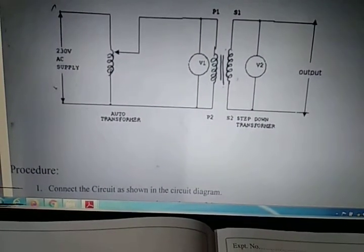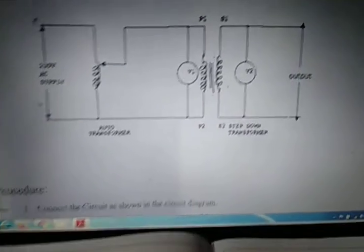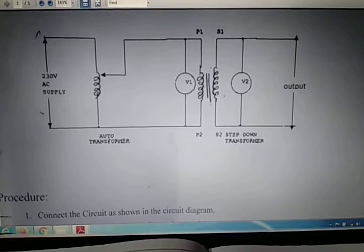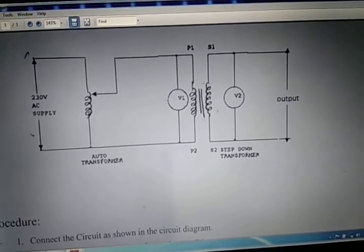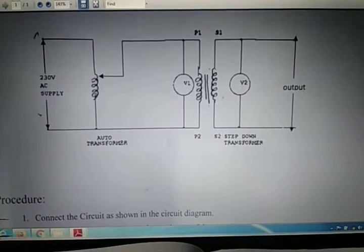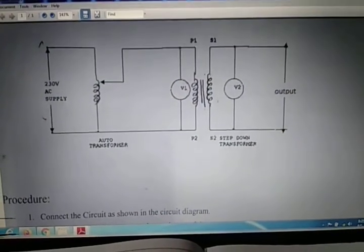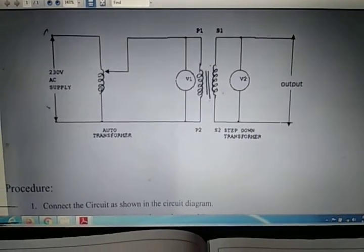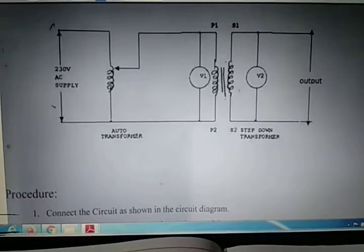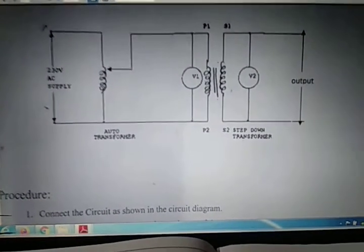While doing this experiment, we have to take some precautions. The precautions are: all connections must be tight, the voltmeter and ammeter must be properly ranged, and the supply should be switched on only while taking readings. Otherwise, we have to switch it off. Thank you everyone.